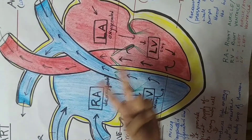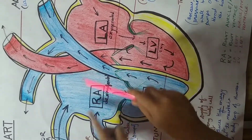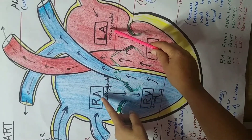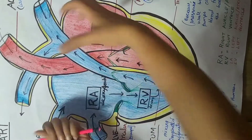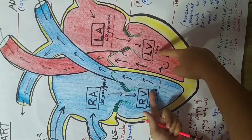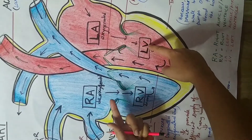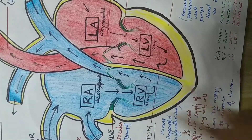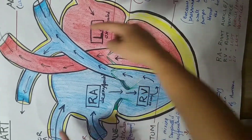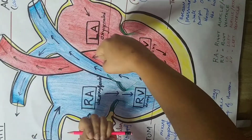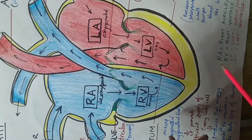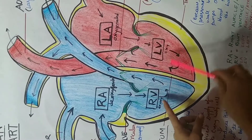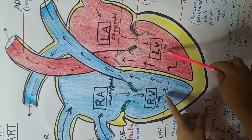The second step of the cardiac cycle is that both upper chambers — right auricle and left auricle — contract. They squeeze all their blood downwards: from the left auricle into the left ventricle, and from the right auricle into the right ventricle. After this contraction, both ventricles are fully filled with blood.